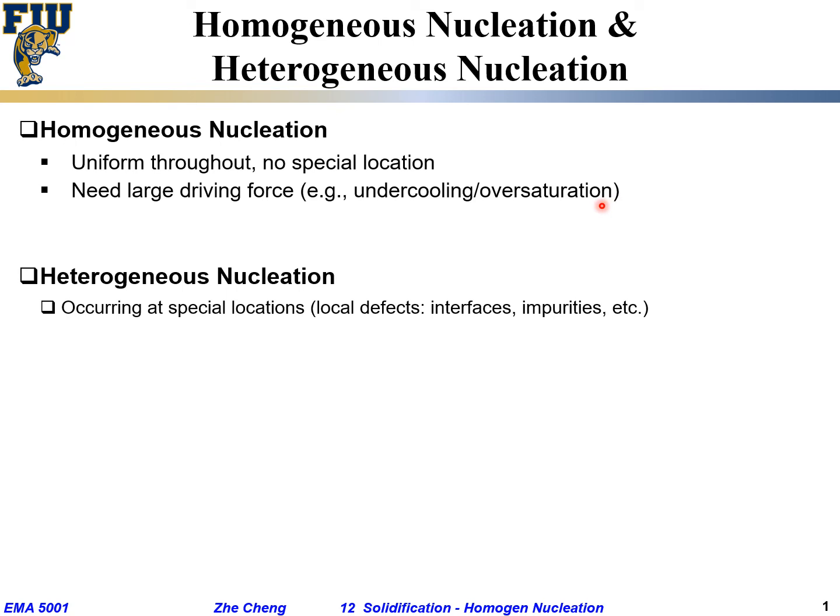Oversaturation, which means it's a uniform phase, but your actual concentration is much higher than the solubility limit. In order for homogeneous nucleation to happen, you need this. On the other hand, for heterogeneous nucleation, you don't need large driving force. You don't need the large undercooling; just a little bit, it will go through the heterogeneous process.